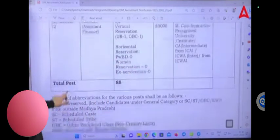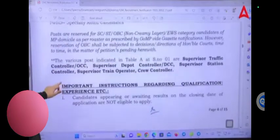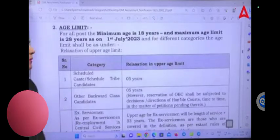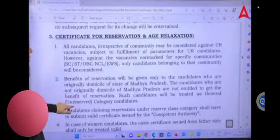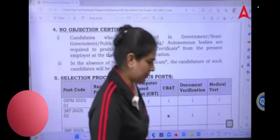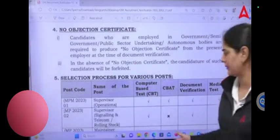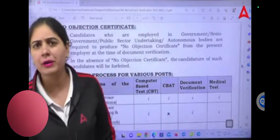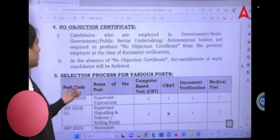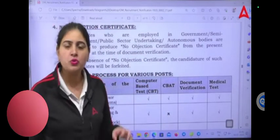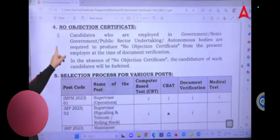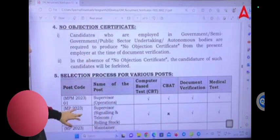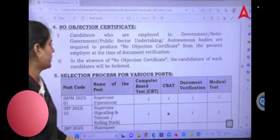Total number of posts is 88. Some important things to discuss: minimum age is 18 years, maximum 18 years. SC/ST/OBC will get 3 or 5 years relaxation. Regarding NOC, if you are working in government or semi-government organization, you have to submit NOC from your department. You will not have any issues when you join the post. When you go to DV, this NOC should be ready.